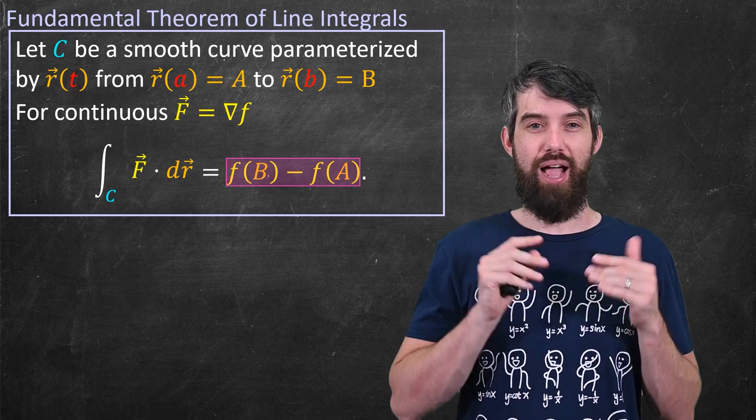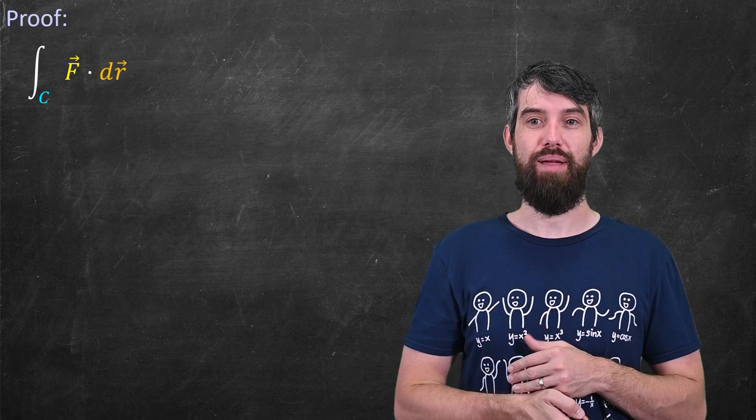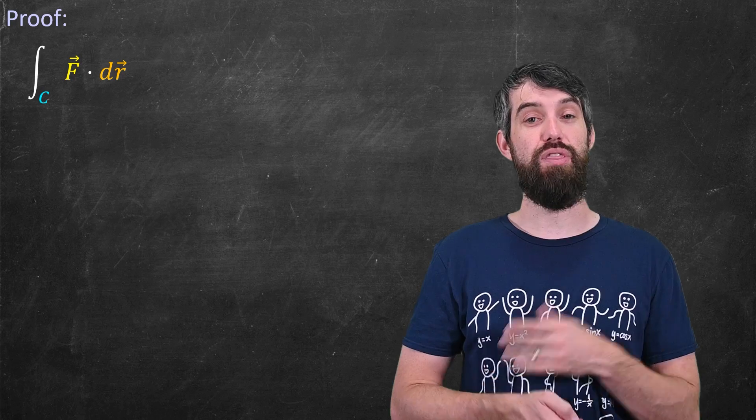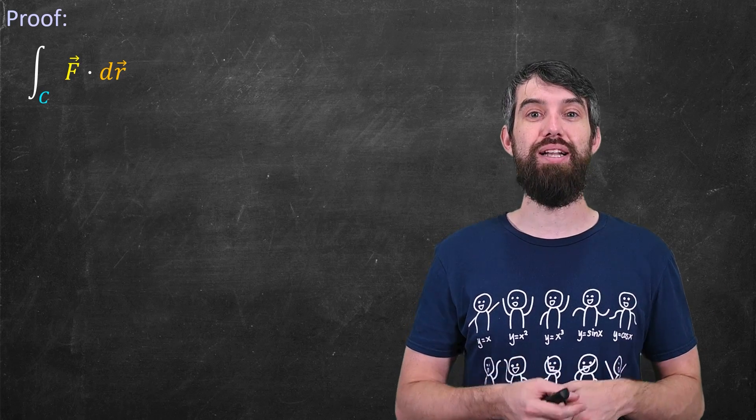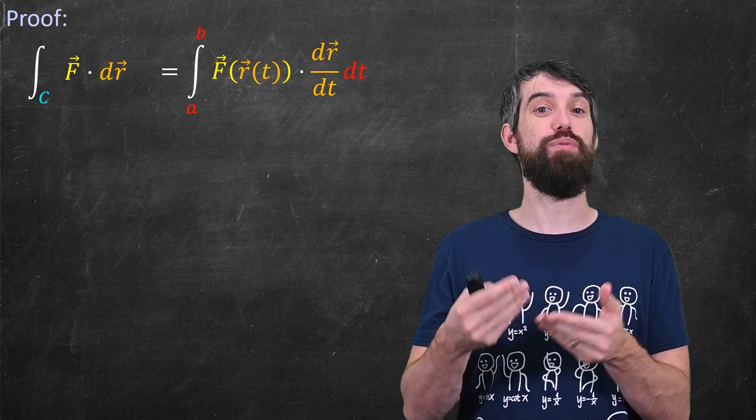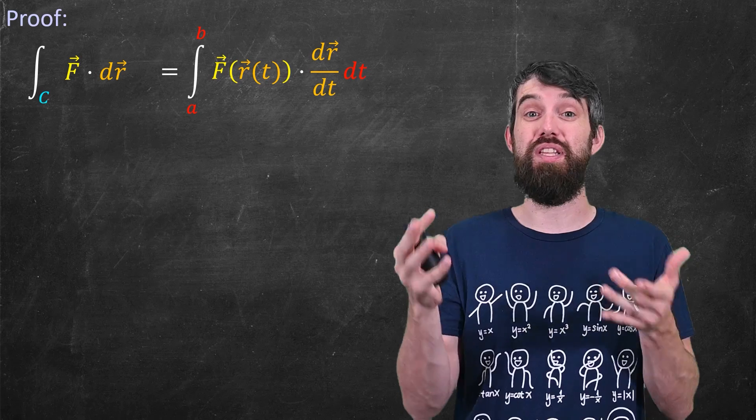Now I actually want to prove this theorem. I love this proof because it cuts directly to the core idea. So okay, let's try to integrate this. I have an integral of F dot dr and the first thing I'm going to do is put it into its parametric form, that is an integral with respect to t. So we write it as the F dot r' version that we've seen previously.